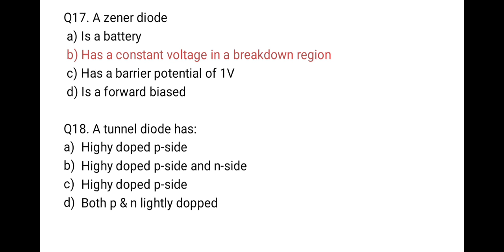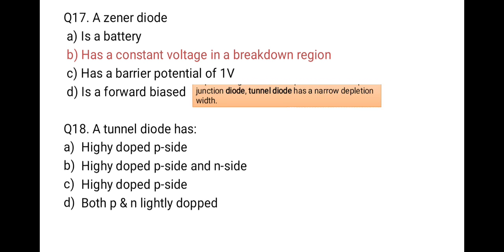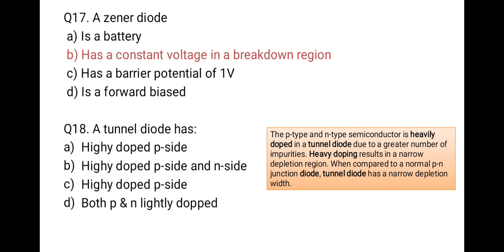The next question: a tunnel diode has — first highly doped P side, second highly doped P side and N side, third highly doped N side, last both P and N lightly doped. We know that a tunnel diode is heavily or highly doped. So the correct option is B: highly doped P side and N side. Due to this heavy doping, it has a narrow depletion width compared to a normal PN junction diode.